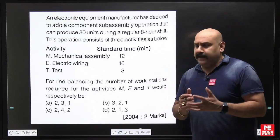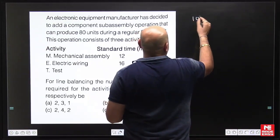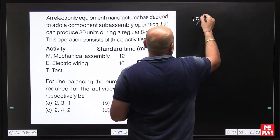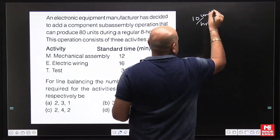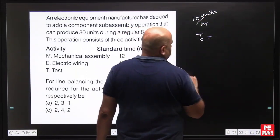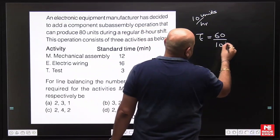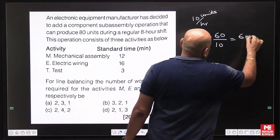80 units during a regular 8 hours means 10 units per hour. So 10 units per hour means what should be the cycle time? In one hour 60 minutes are there, so 60 divided by 10 is 6 minutes. Not directly given, but indirectly in this manner.